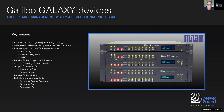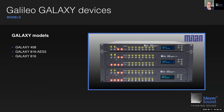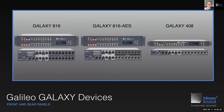It supports SpaceMap Go — our new solution for immersive sound and spatial mixing — and it allows you to talk to multiple clients at once, including Compass control software, Compass Go, and SpaceMap Go. The Galaxy devices come in three flavors: the 408, the 816 AES 3, and the 816, which differ primarily in IO capability. Here you see both front and rear panels of the 816, the 816 AES, and the Galaxy 408, and you can see it's primarily a difference in the number of input and output connectors.